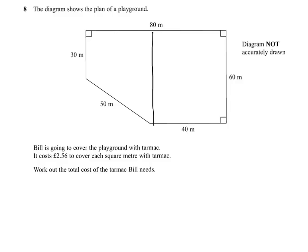The rectangle part, which is straightforward, is 40 times 60, which comes to 2400.